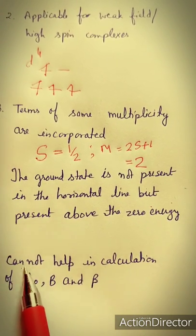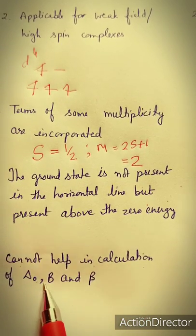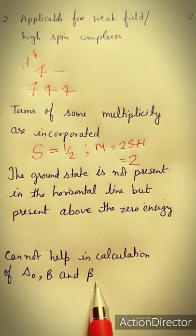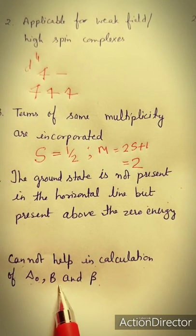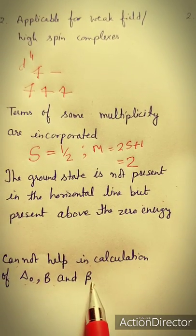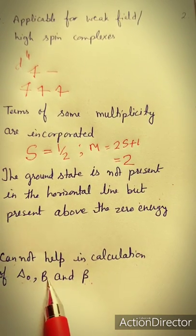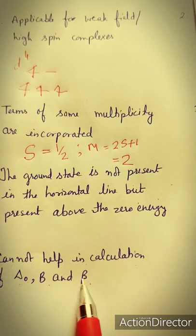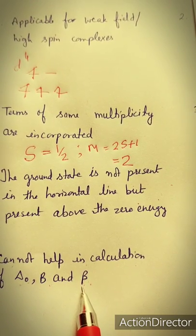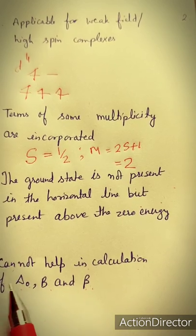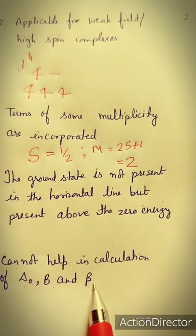Orgel diagrams cannot help in the calculation of δO, B, and β, where δO is the crystal field splitting energy of octahedral complexes, B is the Racah parameter, and β is the nephelauxetic ratio. But with the help of Tanabe-Sugano diagrams, we can easily calculate δO, B, and β.